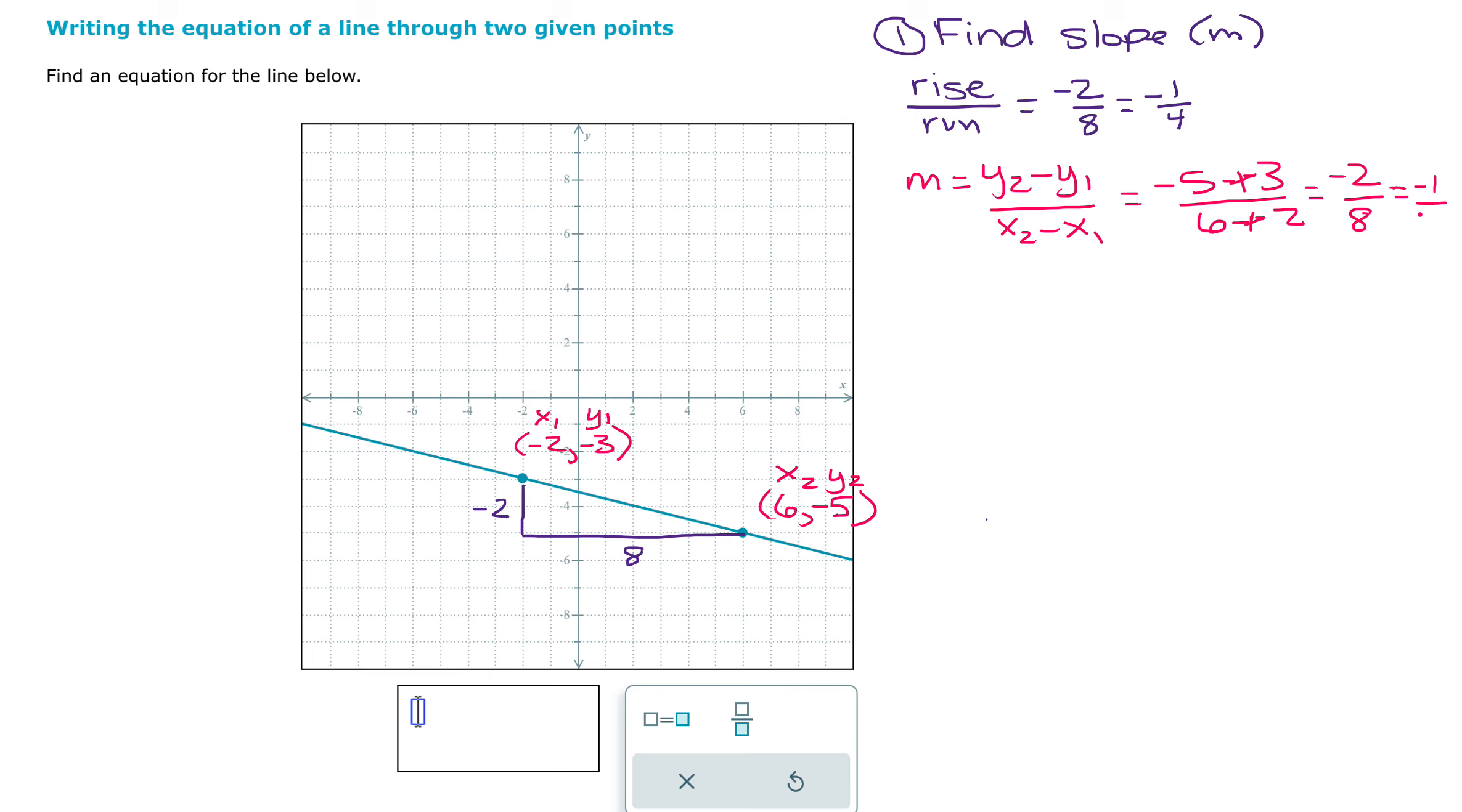So as we would expect, we get the same thing whichever way we do it. So my slope is negative one-fourth.